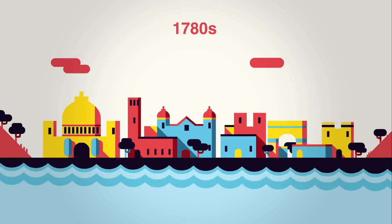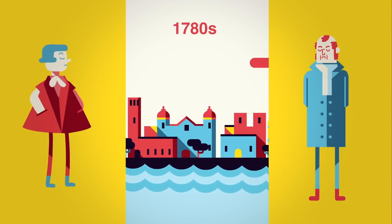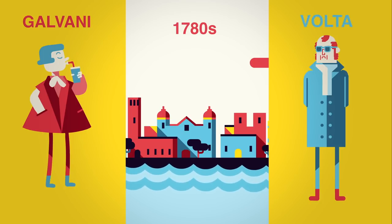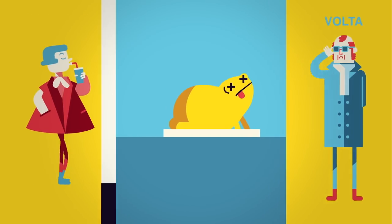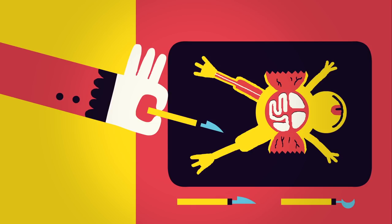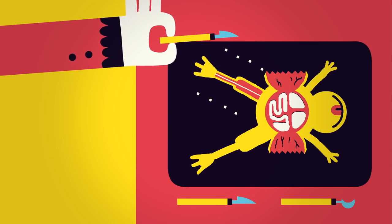It all started in the 1780s with two Italian scientists, Luigi Galvani and Alessandro Volta, and a frog. Legend has it that as Galvani was studying a frog's leg, he brushed a metal instrument up against one of its nerves, making the leg muscles jerk.